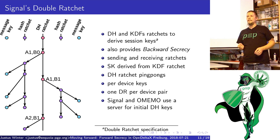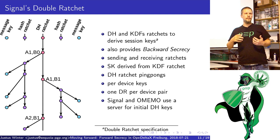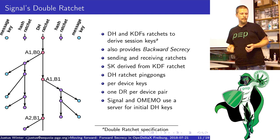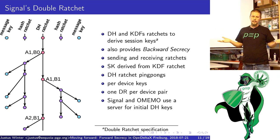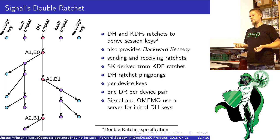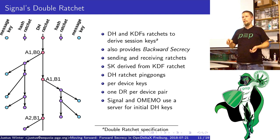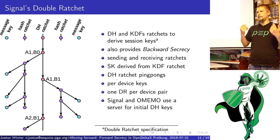We have this hash ratchet because we want to be able to send two messages in a row without our partner replying. Whenever we see a new Diffie-Hellman public key from our partner we do a Diffie-Hellman ratchet step, and every time we want to send a new message we do a hash ratchet step. Signal — and I believe OMEMO as well — uses per-device keys, and there is one pair of double ratchets per device pair that is communicating. You want to be able to read your messages on another device, so you need a double ratchet session with your own device too.